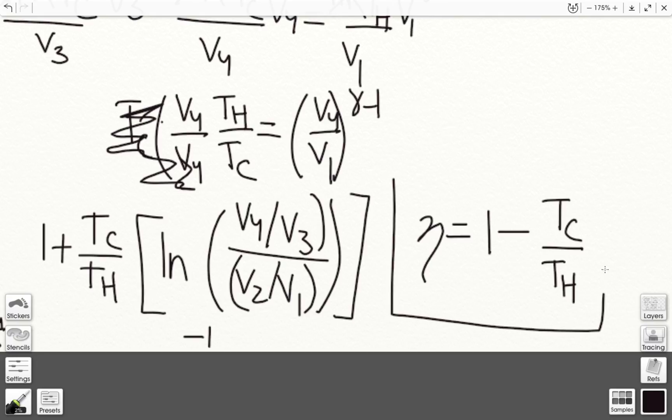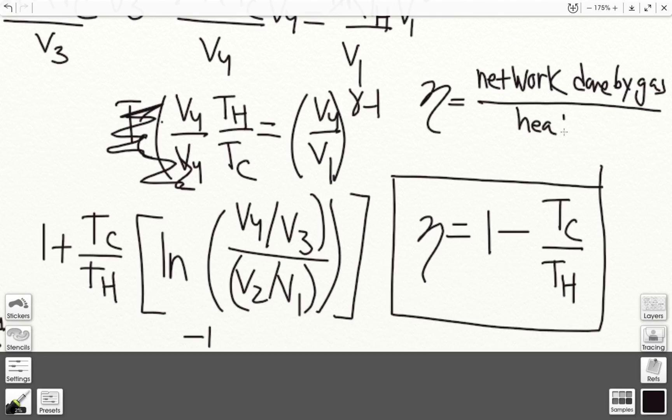So again, many times you will not have to go through this derivation, but the key part is to understand that we've defined efficiency as network done by gas over the heat in, and understanding the original expression for efficiency and that this is the sum of all the work in each process over the initial heat that was input from 1 to 2. And that came out to equal this through some of the equations and assumptions that I've shown here. So I hope that gives you a better understanding of how this expression came to be.